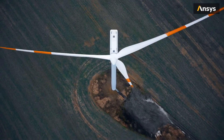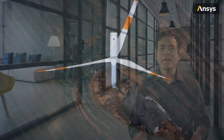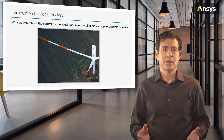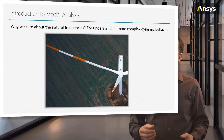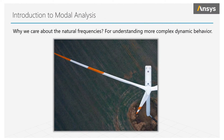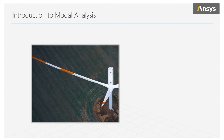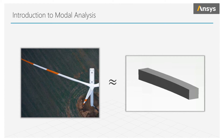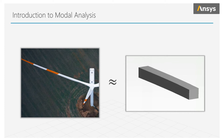But looking at this wind blade, what deformation shapes can we expect, and do we think that one particular shape will dominate? Let's think of the blade as a cantilever beam, which is fixed at the base. By running a modal analysis, we can answer these questions.